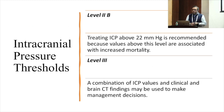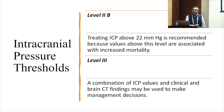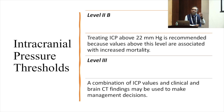The ICP threshold is now 22 mmHg — treat ICP above 22 because values above this are associated with higher mortality. This is the new target: 20 to 22. A combination of ICP values and clinical and CT findings may be more useful to make decisions, because the targets may change at different stages of brain injury. A value of 22 can be taken as a ballpark figure.